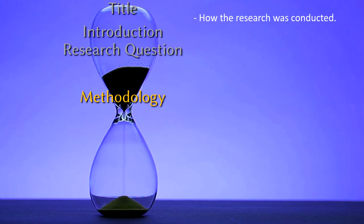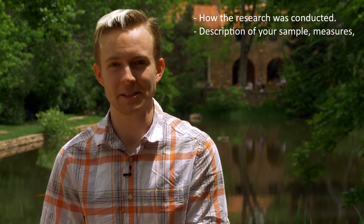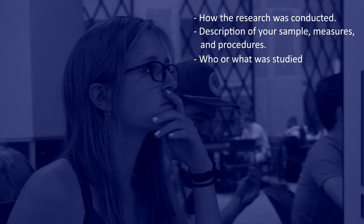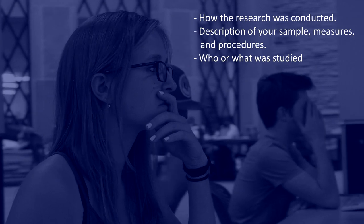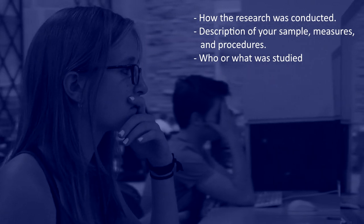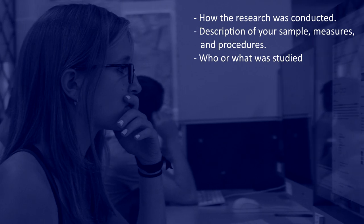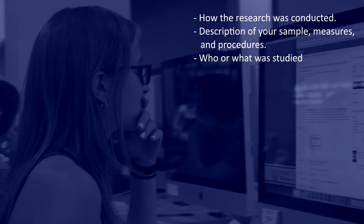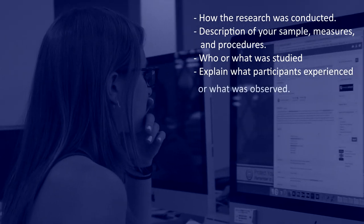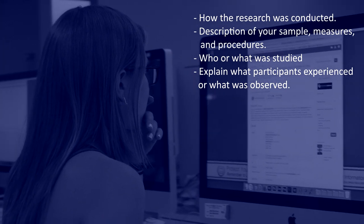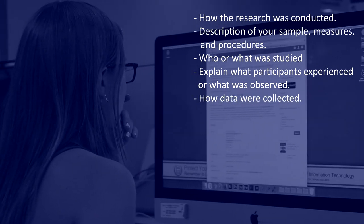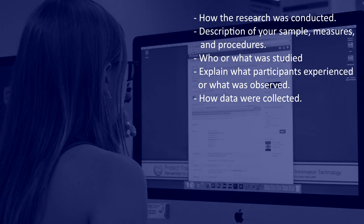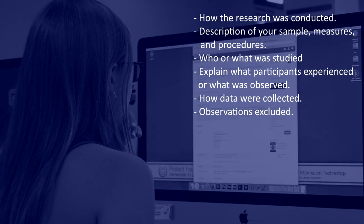The methods section describes how the research was conducted. It includes descriptions of your sample, measures, and procedures. In the sample section, identify who or what was studied — people, animals, etc. If you group observations, use meaningful names like 'low-income fathers' rather than abbreviations like 'LI fathers' or labels like 'control group.' It can also be helpful to describe the procedures — explain what participants experienced or what was observed, discuss whether data were collected by surveillance, survey, case study, or another method. It's also important to mention observations excluded from your analyses, if any.